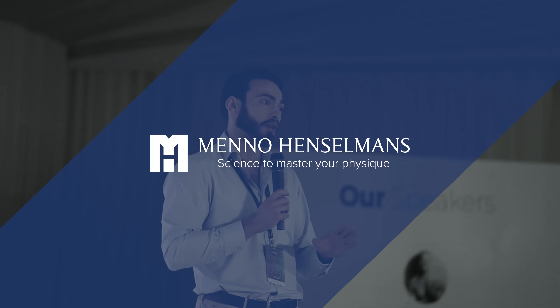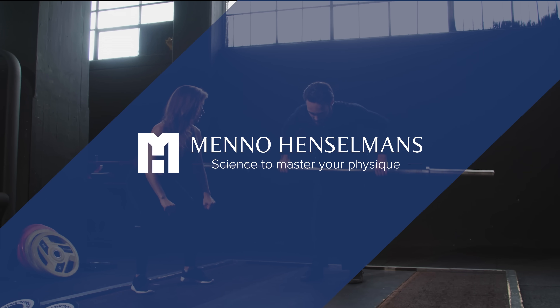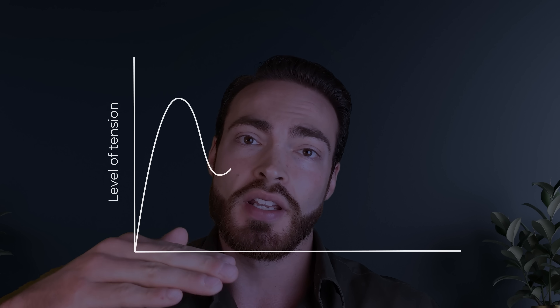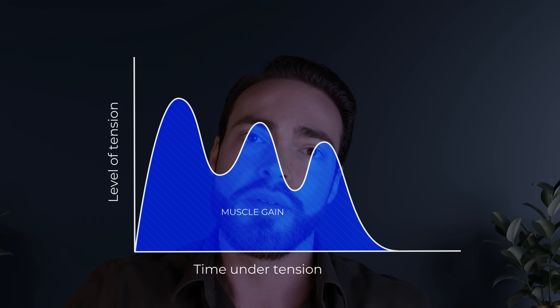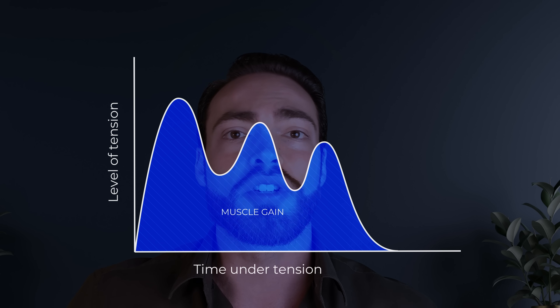The secret sauce of muscle growth is mechanical tension. Mechanical tension is by far the most important driver of muscle growth — research is very clear on this. We can decompose mechanical tension into active and passive components, and also into the level of tension and the time under tension. It is the integral, or the area under the curve, over time that seems to determine how much muscle we gain from our training.